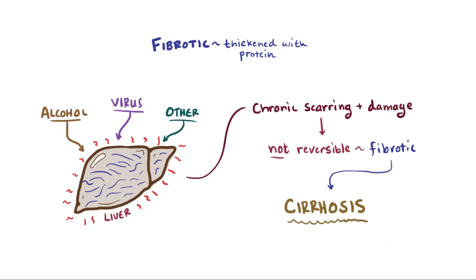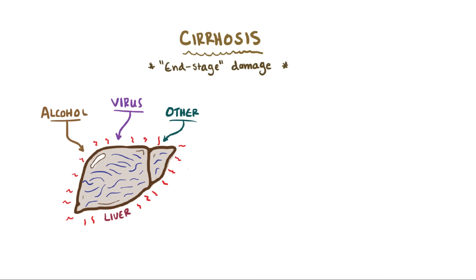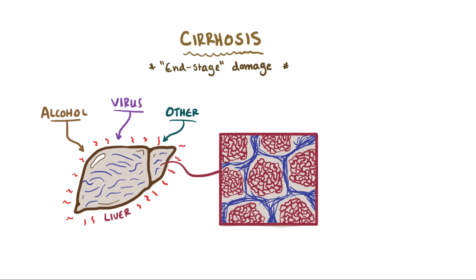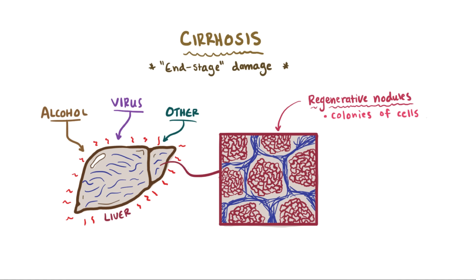Because it's usually irreversible, cirrhosis is often referred to as end stage or late stage liver damage. When liver cells are injured, they start to come together and form what are called regenerative nodules — you can think of these as colonies of living liver cells. These are one of the classic signs of cirrhosis and are why a cirrhotic liver is more bumpy as opposed to a smooth, healthy liver.